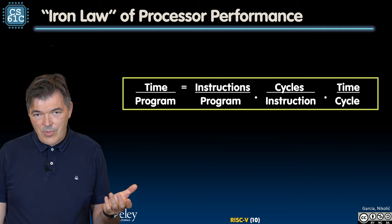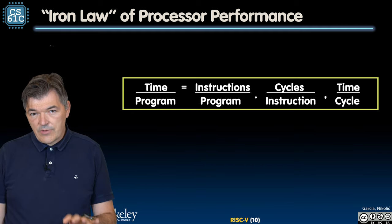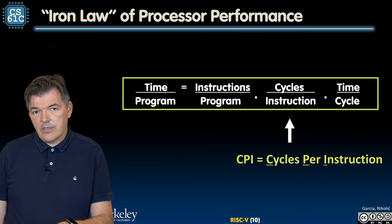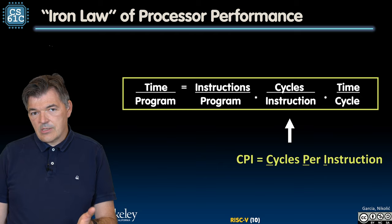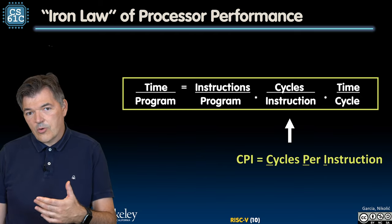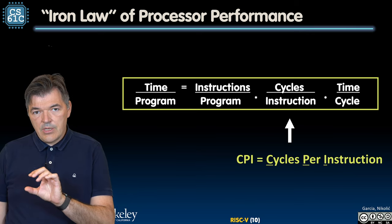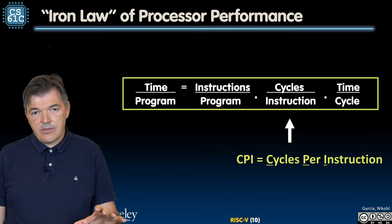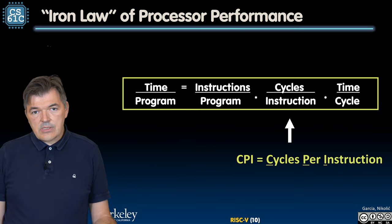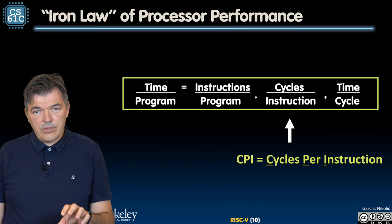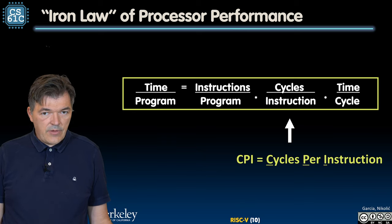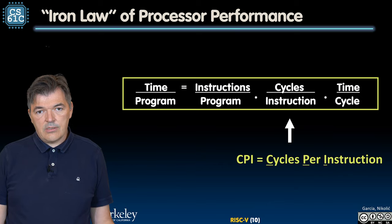Different programs may have different numbers of instructions. One of the fundamental architectural parameters is the number of cycles that it takes to complete an instruction. And pure processor speed is associated with the time to execute one cycle, or the frequency at which the processor runs. But none of these parameters can be analyzed alone — they all have to be put together to understand how long it takes to perform a task. Let's analyze each of these three basic components.